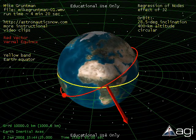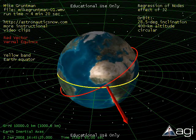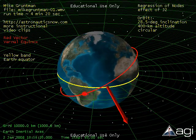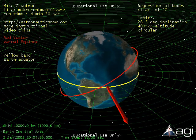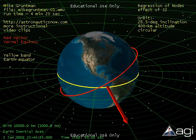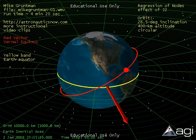Right ascension of ascending node is counted from the vernal equinox vector. One already sees that the ascending node gradually shifts westward. The rate of precession depends on the orbit's semi-major axis, eccentricity, and inclination.